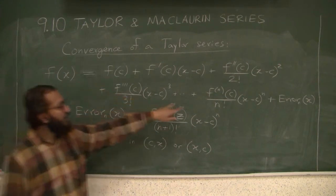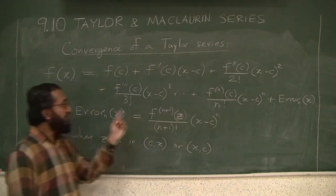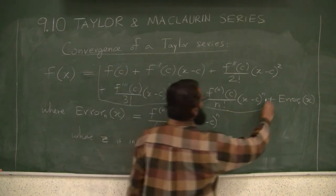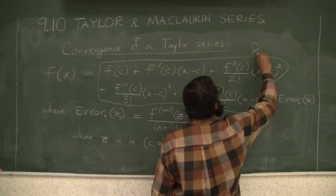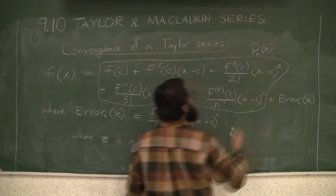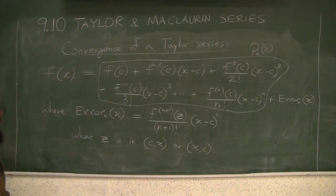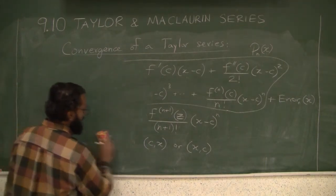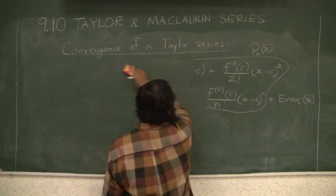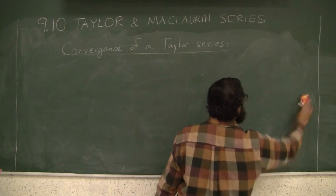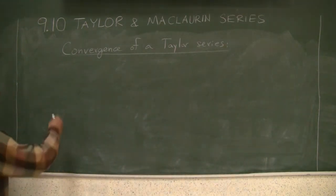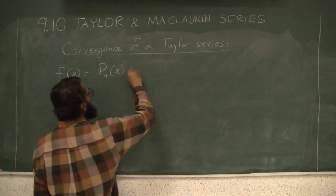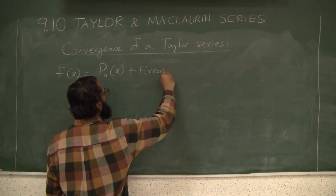Now, you see, if you look at it, the nth degree polynomial is like the nth partial sum of the full Taylor series. This whole thing is the nth degree polynomial P_n of x. So what we can do, we can say f of x equals the nth degree polynomial, whatever degree we choose, plus the error in the nth degree polynomial of x.